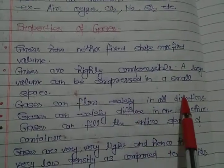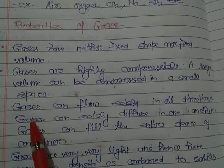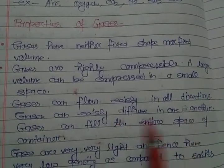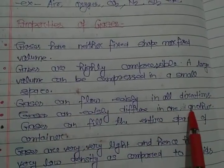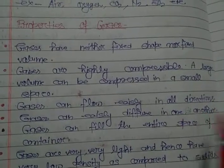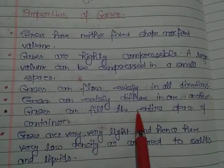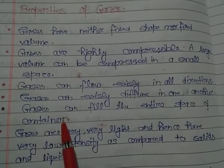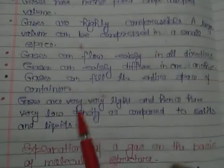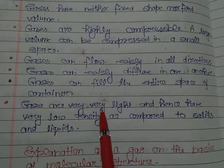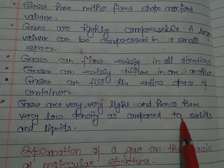Gases can flow easily in all directions. Gases can easily diffuse in one another — that is, they can be mixed easily. Gases can fill the entire space of a container. Gases are very light and hence have very low density as compared to solids and liquids.